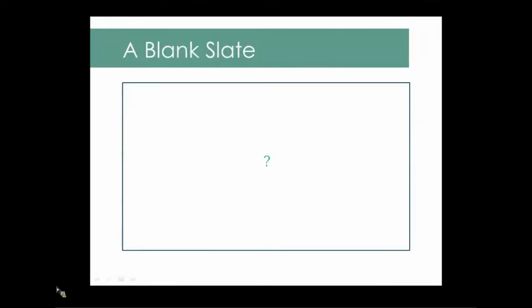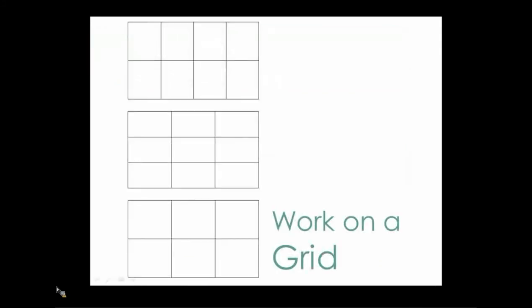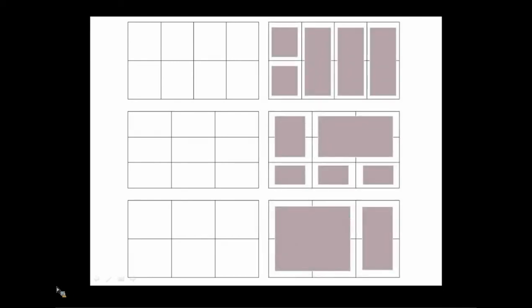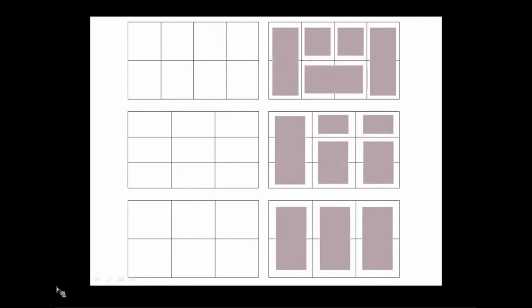Starting with a blank canvas can seem overwhelming — where do you start? One tip is to break your space up into units where you can section information into logical groups. Dissect your draft poster into a grid — this can become the basic blueprint of your future poster. Play around with moving text and sections to fit in different parts of your grid. Make smaller sketches and mock-ups to help plan and come up with the best solution.